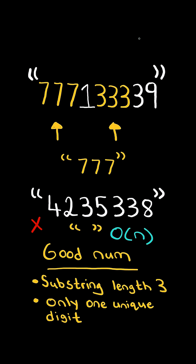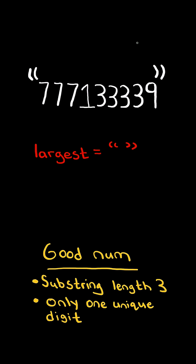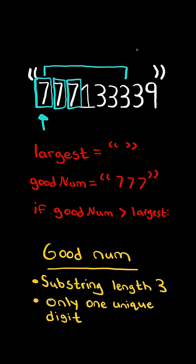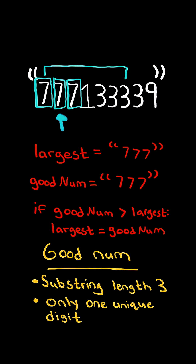We will solve this in O of n time. First, we initialize an empty string. We then iterate from the first element to the third last element, and we consider the number we are on, and check the next two numbers if they're all equal. If so, we found a good number, and if the good number is greater than largest, we set largest to equal good number, and we continue.